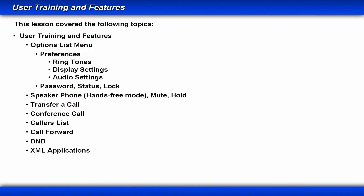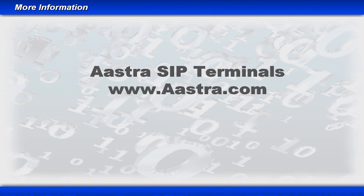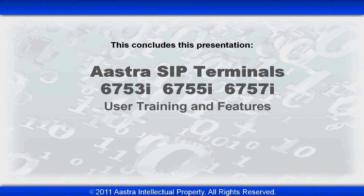In this lesson, we explored the menu options and I demonstrated how to navigate through the different menus using the up, down, left, and right arrow keys, along with the Select and Done soft keys. I also demonstrated a variety of features — some features may vary based upon the way your PBX is set up. For additional information and a complete list of features and procedures on how to use them, go to www.astra.com. This concludes this lesson on the AstraZip Terminals User Training and Features.